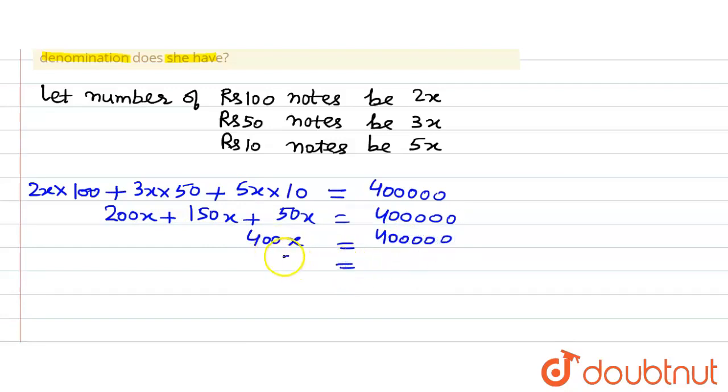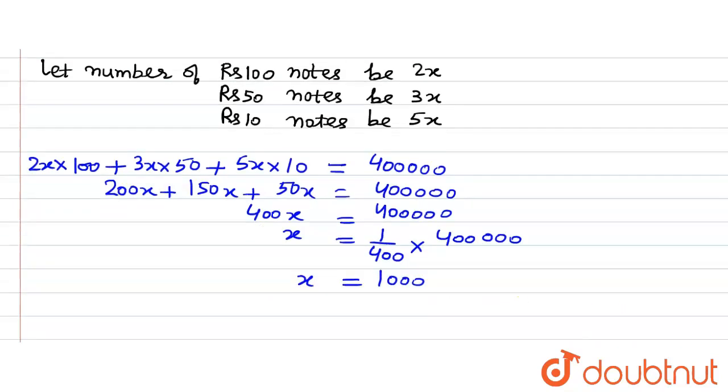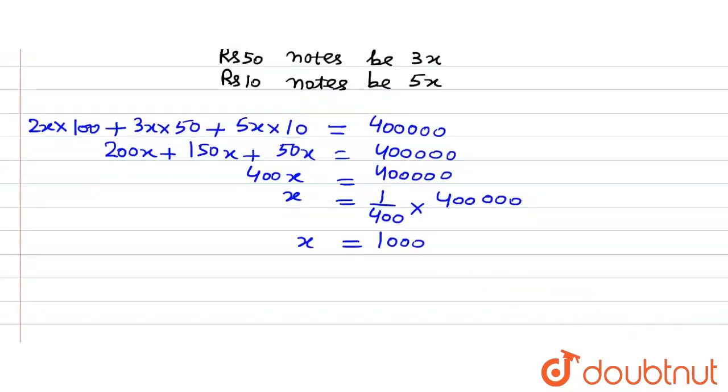Now 400 is getting multiplied here so when it will go to the right hand side of the equation it will get divided. So x is equals to 400 multiplied by 1000 is equals to 400 divided by 400, so we will get x as 1000.